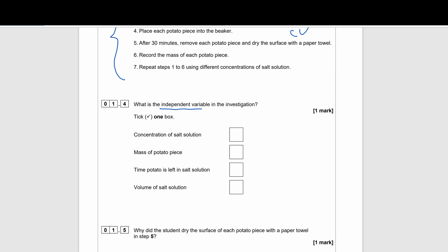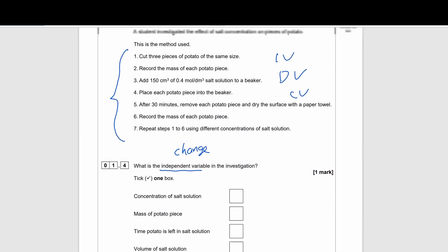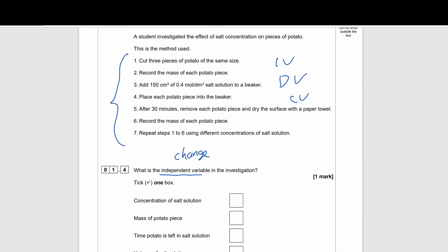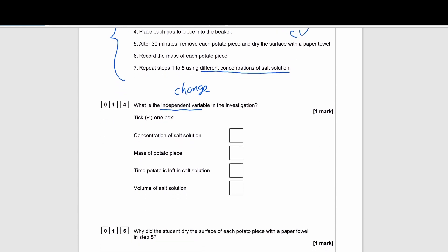Remember that there are three types of variables in any experiment: independent variable, dependent variable, and control variable. You should remember what each of those terms means. They may even ask you what is an independent variable or what is a dependent variable in the investigation given to you. So that means from the method you should be able to figure it out.